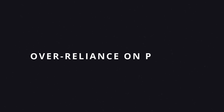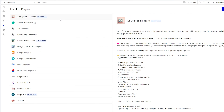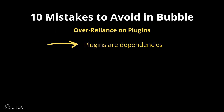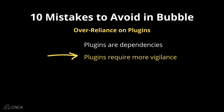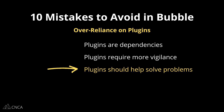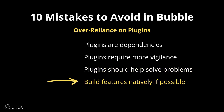The next mistake you want to avoid is an over-reliance on plugins. While plugins can definitely add powerful features, over-relying on them can make your app more complex and harder to maintain. Sometimes it's better to use built-in Bubble functionalities whenever possible. Remember that a plugin is a dependency in your app — every plugin you install depends on outside services, code, and maintenance. The more of these you have, the more vigilant you have to be about feature reliability. Plugins should help you solve a problem in your app, not just create a shortcut. If you can create a feature yourself from scratch, even if it takes more time, that time is likely a better investment in the longevity of the feature.